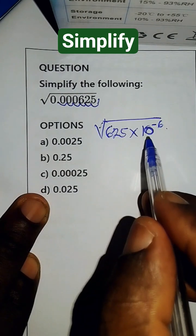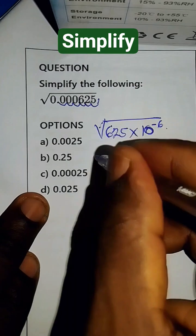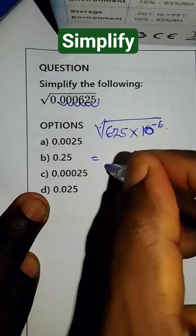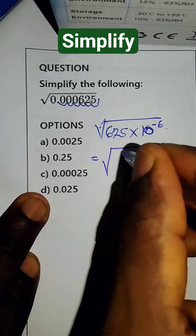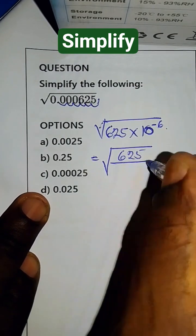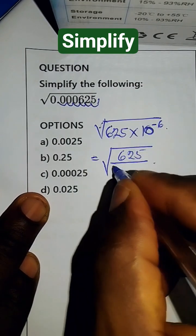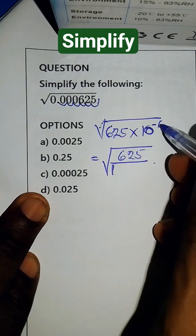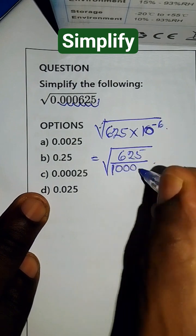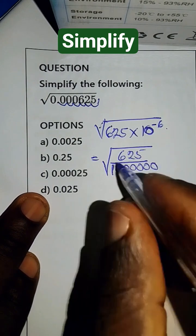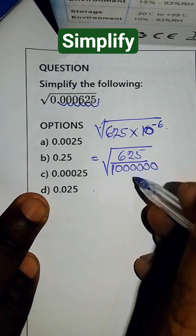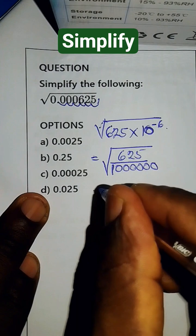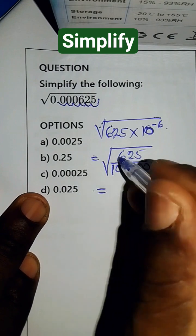Another way to represent this is to write it as 625 all over 1,000,000. How many zeros do we have? 6 zeros: 1, 2, 3, 4, 5, 6. So now to find the square root of this, you find the square root of the top and the square root of the bottom.